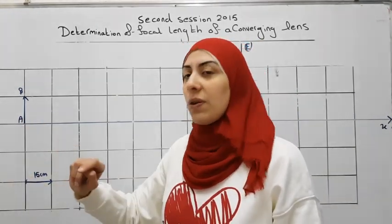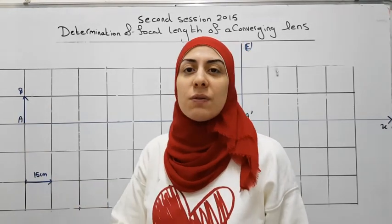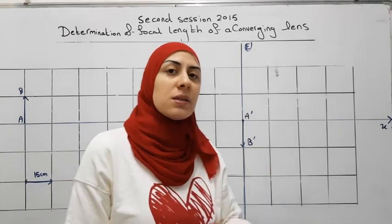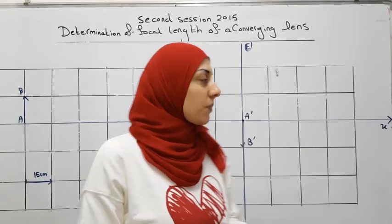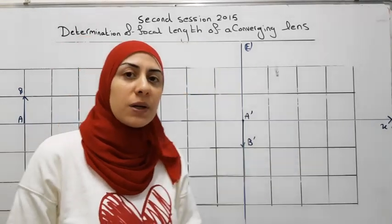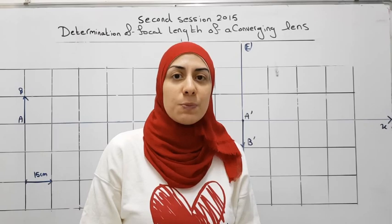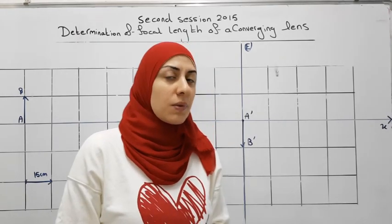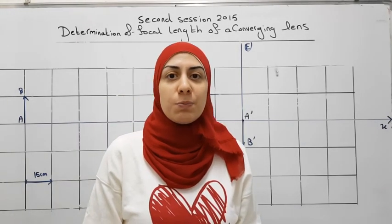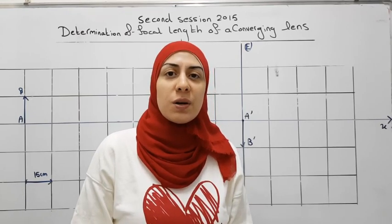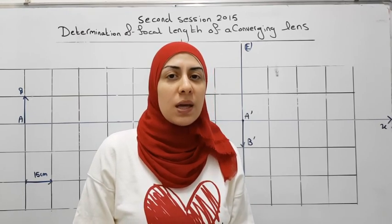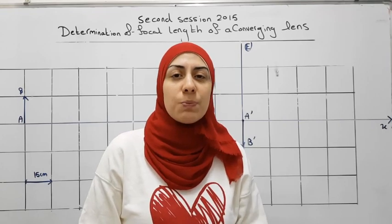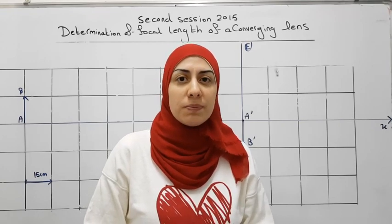We place A on the optical axis and AB is of size 1 centimeter graphically. On the other side of the lens, we put a screen E that is parallel to AB at distance P' from the converging lens. We adjust the distances P and P' until we have a sharp image A'B' on the screen such that AB equals A'B'.